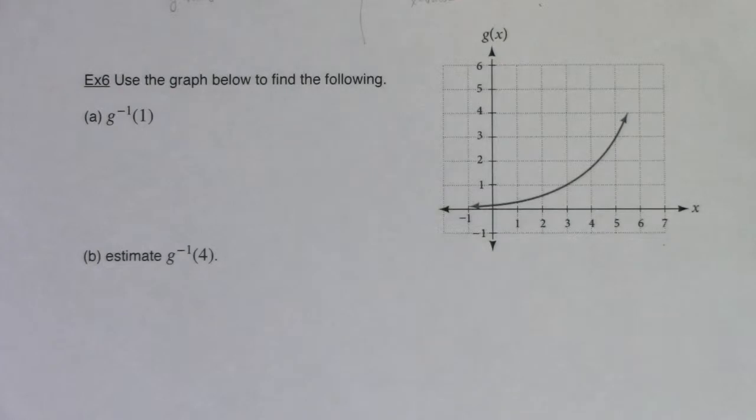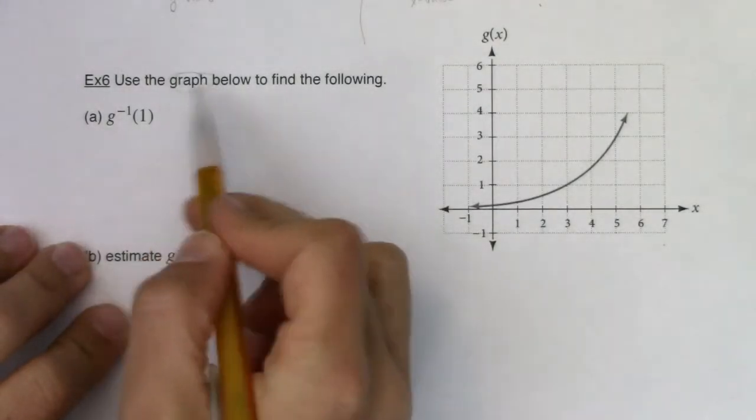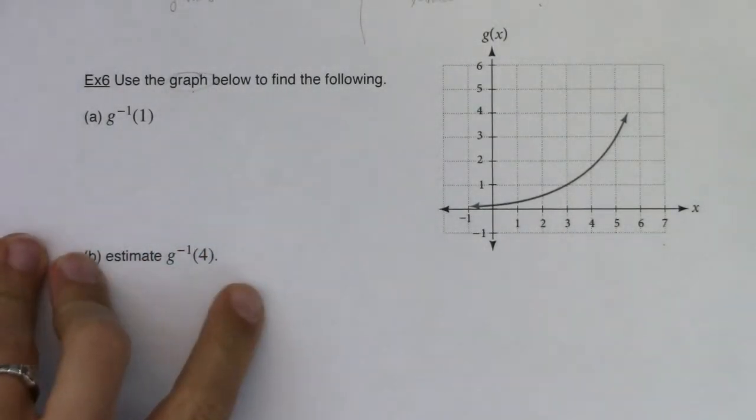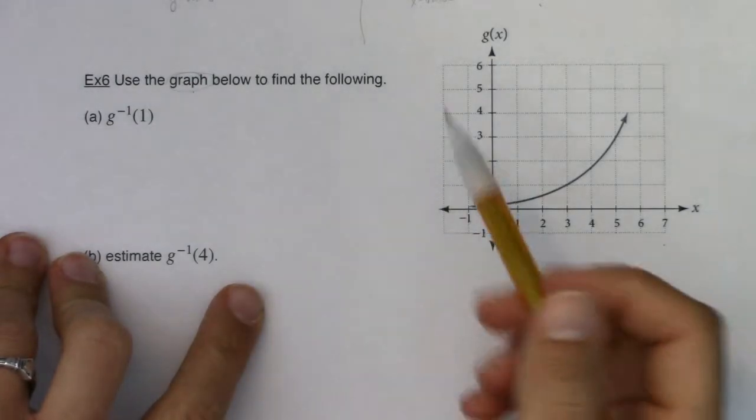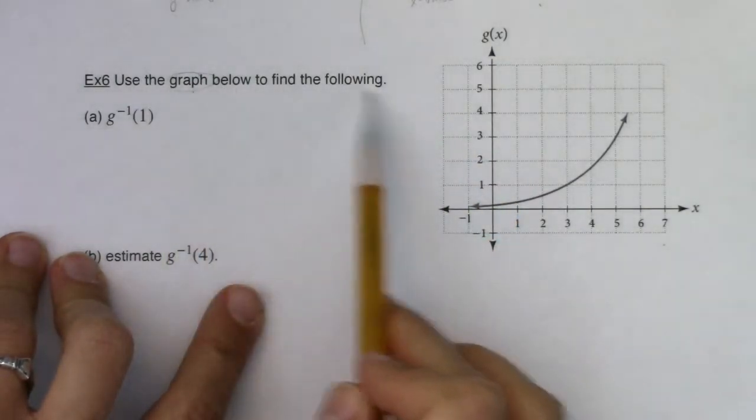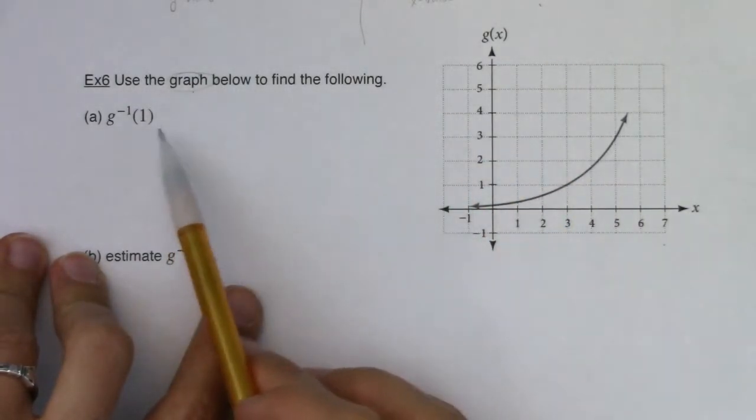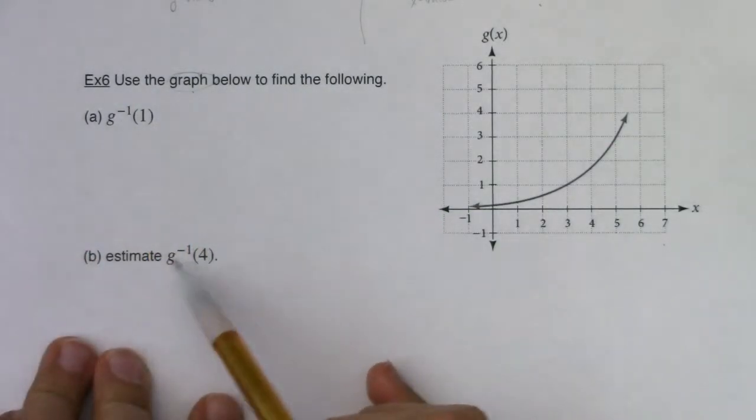Hey Math 31, we're back. We're going to take a graphical approach to finding inverse functions or inverse function values. We'll use the graph below to find the following: g inverse of 1, and then estimate g inverse of 4. I'll talk about why this says estimate and this one doesn't in just a bit.